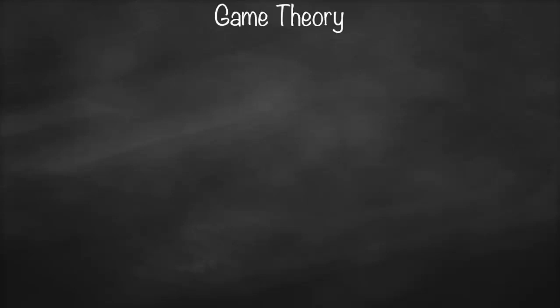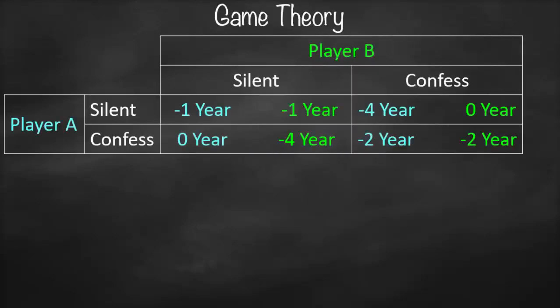This is an example of game theory by John Nash. Let's assume we have two players, or two prisoners. For player A and player B, if both of them stay silent, each one of them will spend one year in prison, represented as negative one. If both prisoner A and B confess, both of them will spend two years in prison, so each one gets negative two.